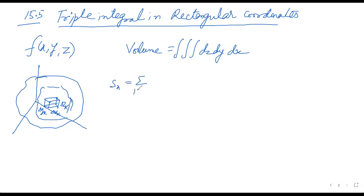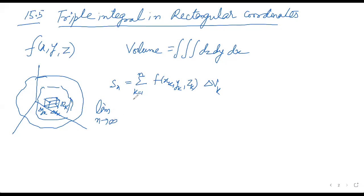So by the Riemann sum formula, you can write S_n equal to summation k equal to 1 to n of f(x_k, y_k, z_k) times the volume of the small piece, which is delta v_k. Now if I will take limit n tending to infinity — just extending the concept of double integral to triple integral, I have added one more dimension — limit n tending to infinity of S_n will give you the triple integral over domain D of f(x, y, z) dV, where dV equals dx dy dz.